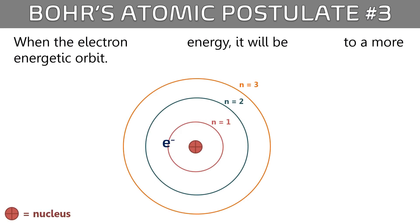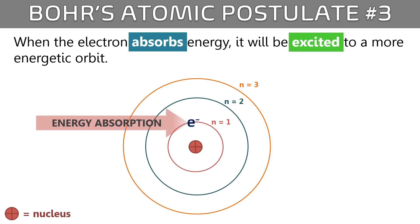When the electron absorbs energy, it will be excited to a more energetic orbit. As you can see, the electron has moved up to N equals to 2, which is higher than N equals to 1. Given enough energy, the electron can move to a higher energy level like N equals to 3, 4, 5, even infinity. Again, you get the point, right?